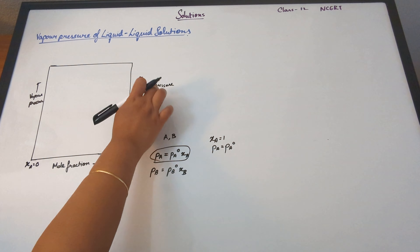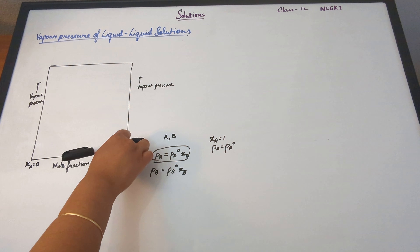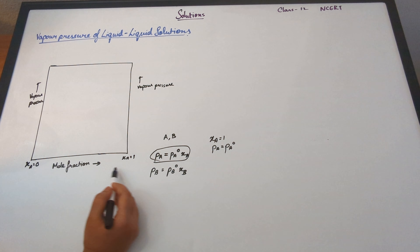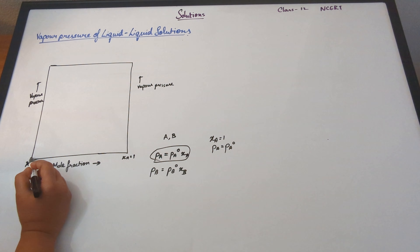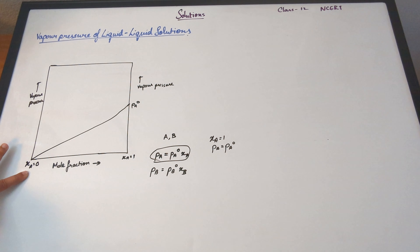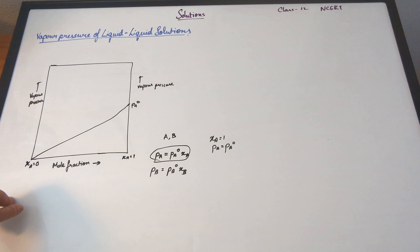Now let's look at this equation specifically: Pa = Pa0 × Xa. When the value of Xa equals 1, the value of Pa becomes equal to Pa0. This essentially means that our solution consists of just the pure component A. So here you have Xa = 0 and Xa = 1. When Xa equals 0, the vapor pressure of A will also be 0.